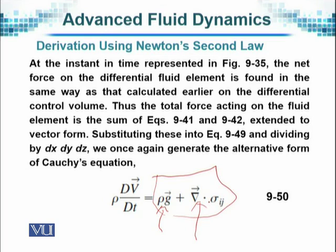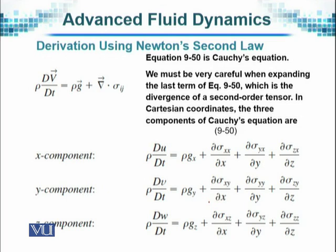So the Cauchy's equation component wise, x-component will be rho du by dt. If u, v, w are the x, y, z components of the velocity in Cartesian coordinates, then the equation can be written. The x-component can be written in this form.